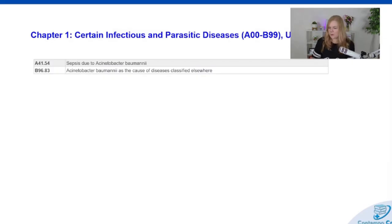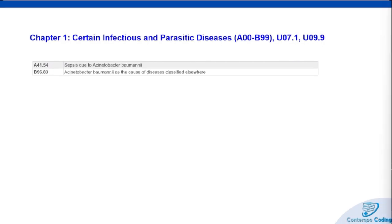Starting with Chapter 1, we have two new codes: A41.54 and B96.83. These are for different types of bacterial infections — the bacteria are kind of everywhere, in the soil and in the water, and it's a big deal because they can infect different parts of your body, from your blood to your lungs. Sometimes they just exist in your system without causing harm, but when they're resistant to antibiotics it can be problematic. This is what they call carbapenem-resistant bacteria, and in 2017 it caused around 8,500 infections and 700 deaths in U.S. hospitals.